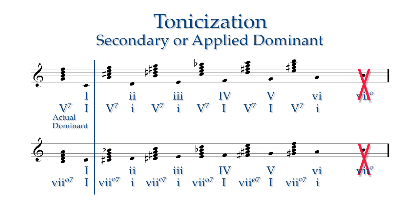Take some time to study the secondary dominant chords in the key of C major. Notice that when a note is altered up a half step, it is most often the leading tone of the secondary key. When a note is lowered a half step, it is the seventh of the chord, or the lowered fifth of the leading tone chord. As a rule of thumb, whenever you find a dominant seventh chord or a diminished chord that does not belong in the key that you have been in, you are, at least temporarily, in the key that the dominant or leading tone chord does exist in.